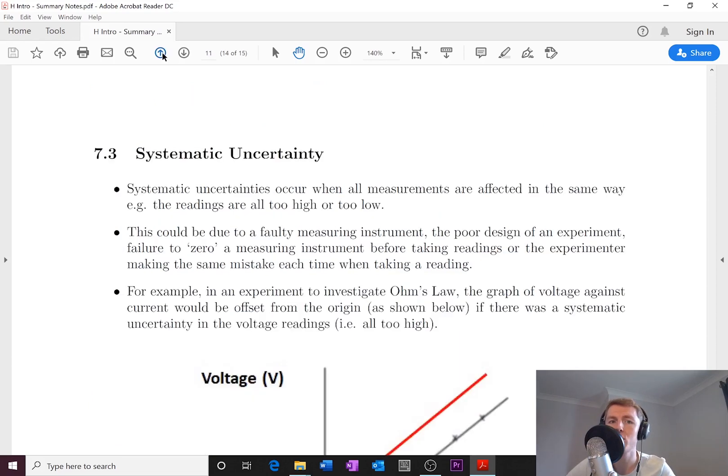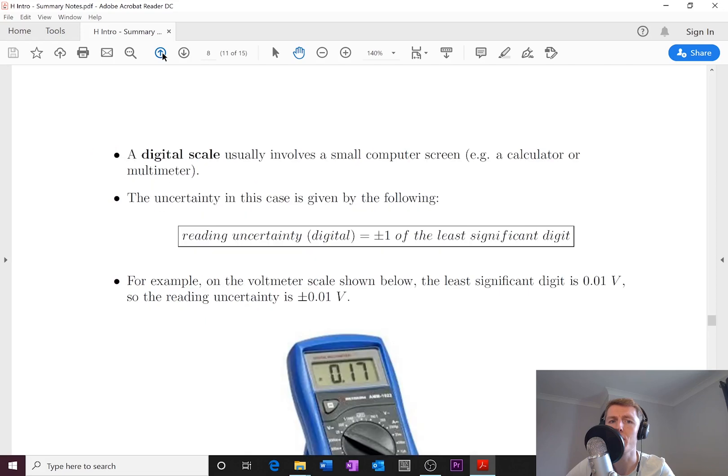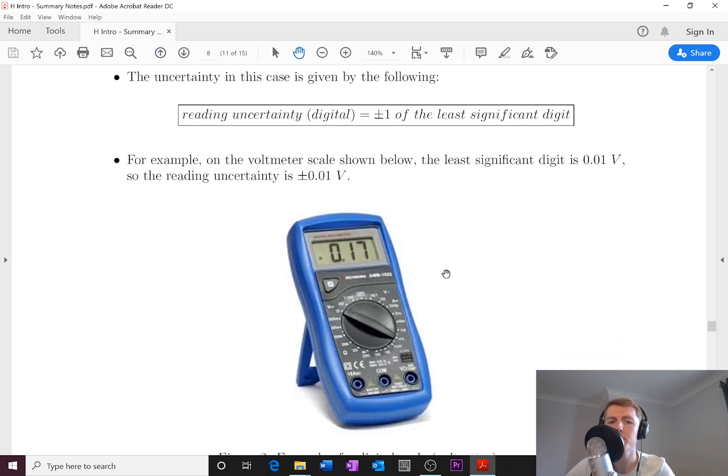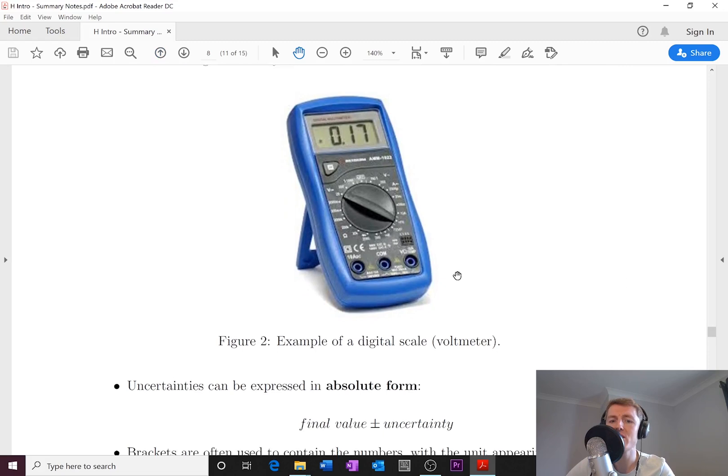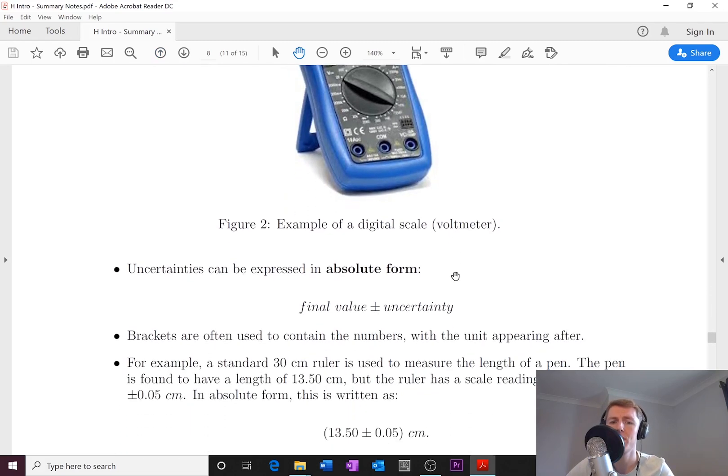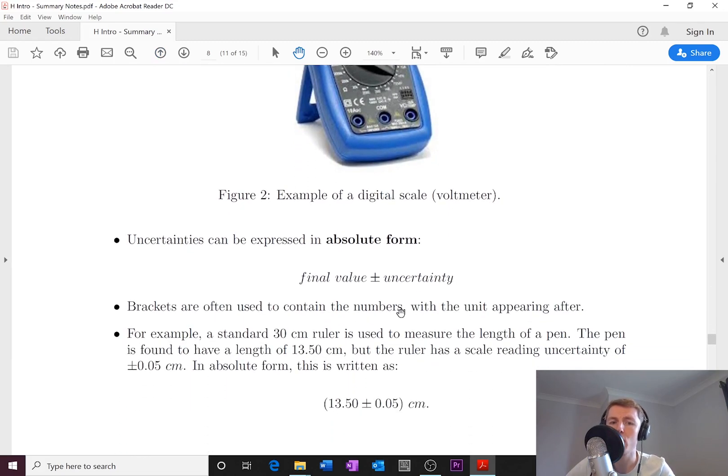Let's go back to the part we talked about for a scale reading uncertainty in the previous video where we looked at measuring a pen with a ruler. If you measured a pen with a ruler, using this example we got a measurement of 13.50 plus or minus 0.05 centimeters. Now this, remember, is an absolute form.